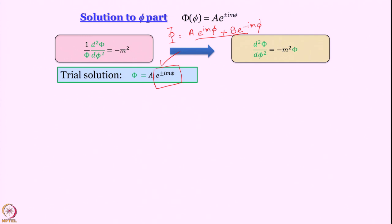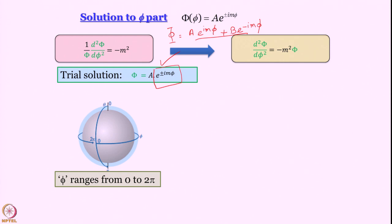Plug the trial solution in. I hope everybody is sitting with pen and paper and writing as we go along — that is the only way to understand. When you differentiate capital Phi twice with respect to phi, you get d²Φ/dφ² = −m²Φ. Differentiating e^(imφ) twice gives back m². This is exactly why we used m² in the separation of variables — because we know we can then write the solution conveniently as e^(imφ). We will also explain why we write m and not some other letter.